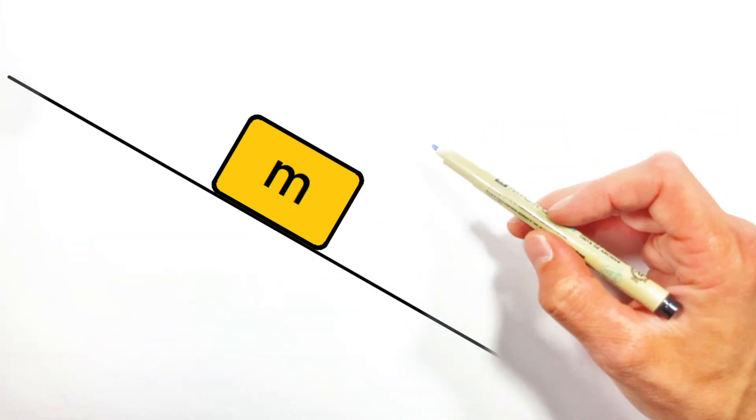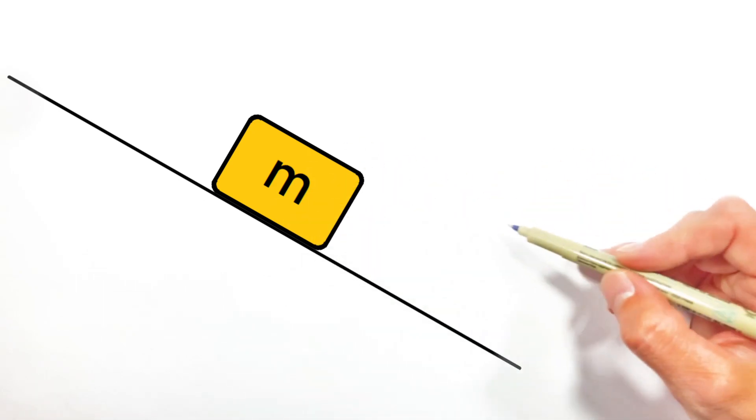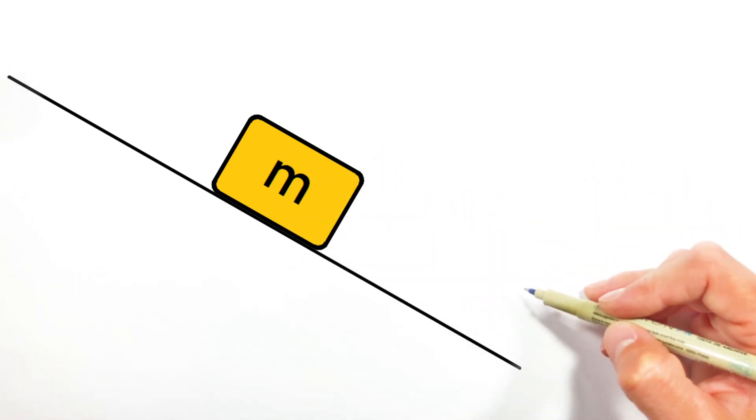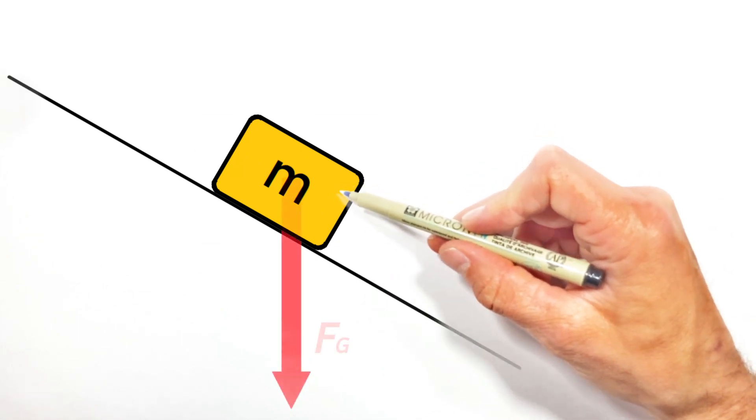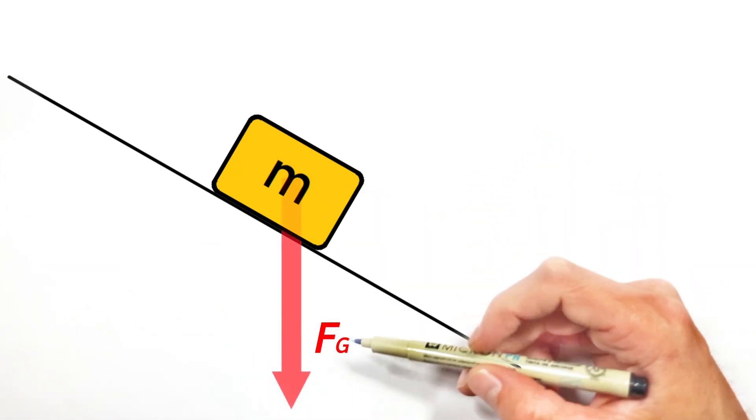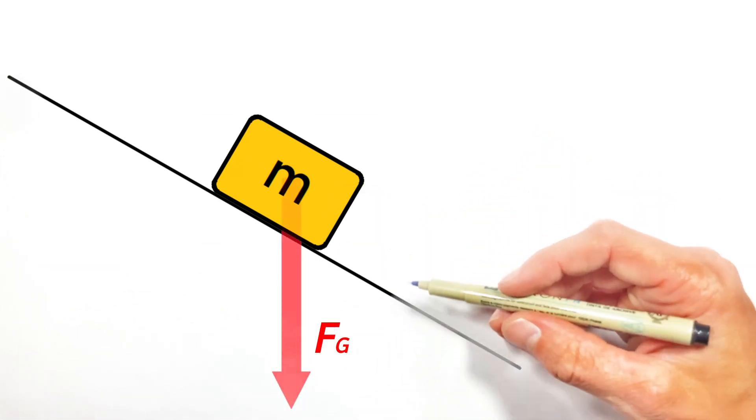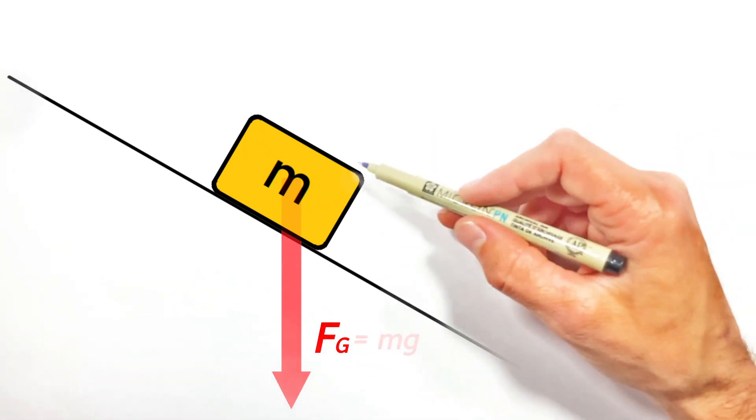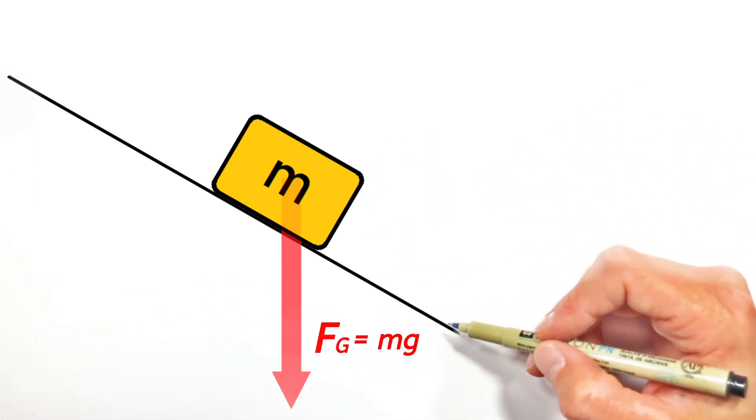You see, there's actually only two forces acting on this block right here, and neither of them are pointed downhill. The first is gravity, which we know is straight down. And gravity, or what we'd call the weight of the object, can be calculated just knowing the mass of the block times the acceleration due to gravity.